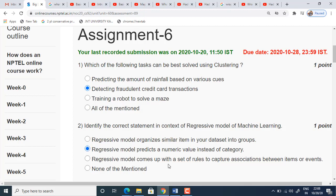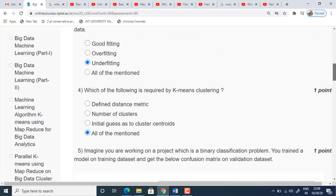The third one is regressive model comes up with a set of rules to capture associations between items or events. This is called association rule mining actually, the third one. So the appropriate answer for the second question is the second option. Regressive model predicts a numerical value instead of category.